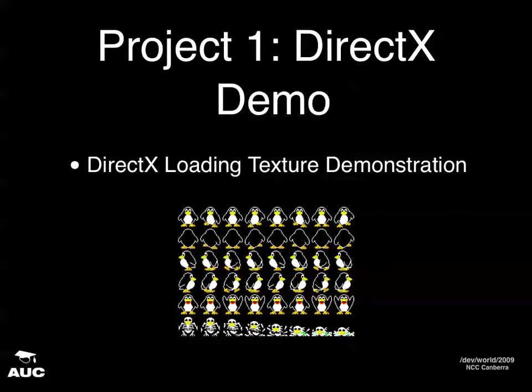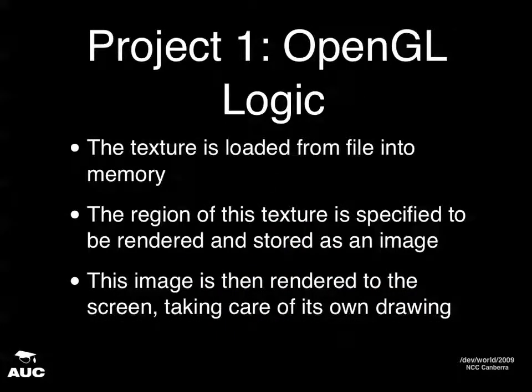How do we do that in OpenGL? It has the same basic logic — the texture is loaded from file into memory. However, in my implementation the region of the texture is specified and stored into an image, so you have just that texture you want to draw in its own image. That individual image is then loaded onto the screen — just a different way of doing it.